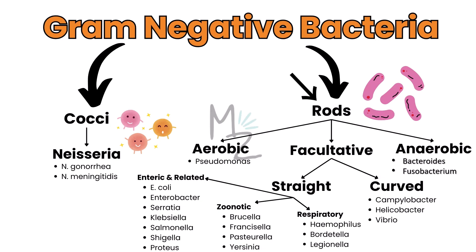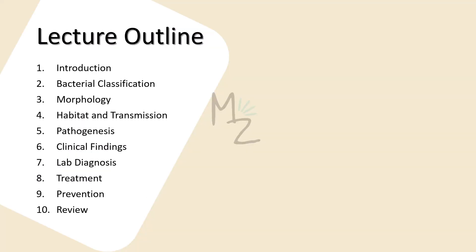Gram-negative rods are further subdivided into aerobic like Pseudomonas, anaerobic like Bacteroides and Fusobacterium, and facultative. Facultative rods include curved organisms like Campylobacter, Helicobacter, and Vibrio, and straight organisms including enteric and related genera like E. coli, Enterobacter, Serratia, Klebsiella, Salmonella, Shigella, and Proteus; respiratory like Haemophilus, Bordetella, and Legionella; and lastly zoonotic, which includes Brucella, Francisella, Pasteurella — today's topic — and Yersinia.